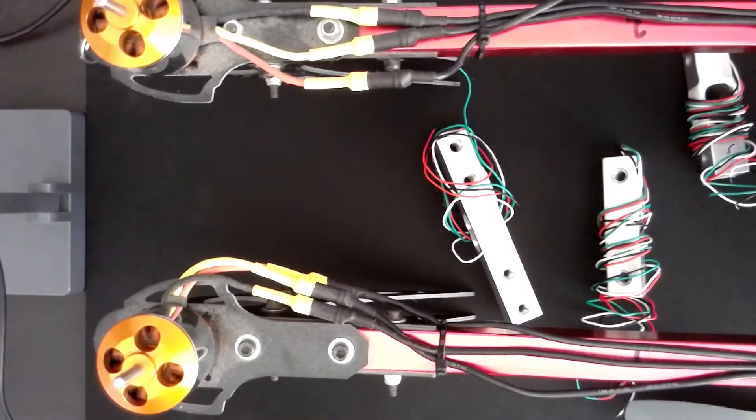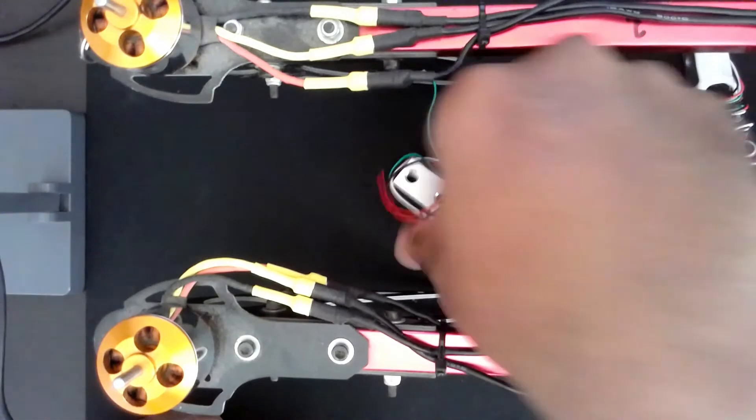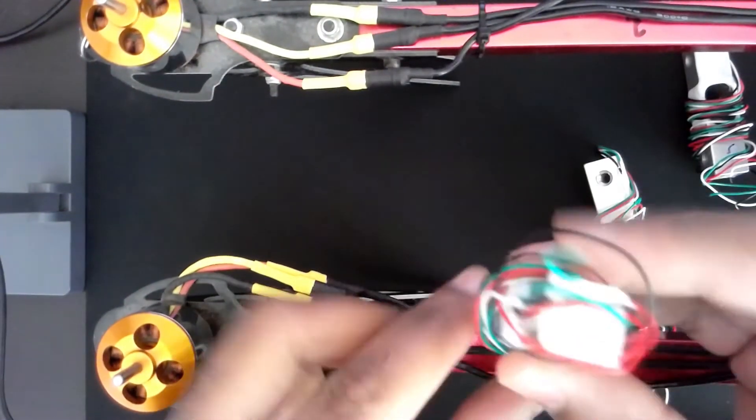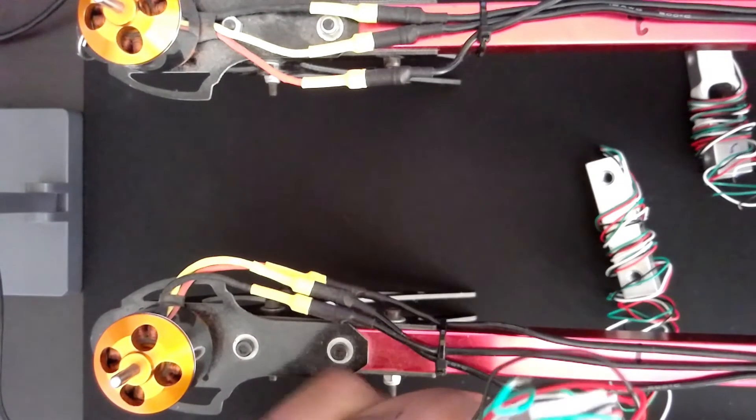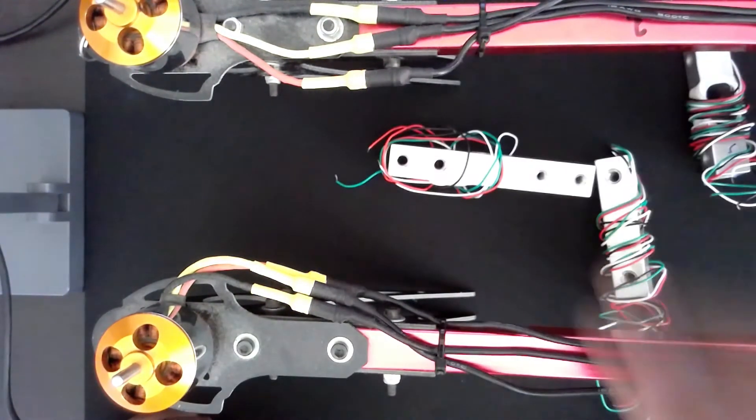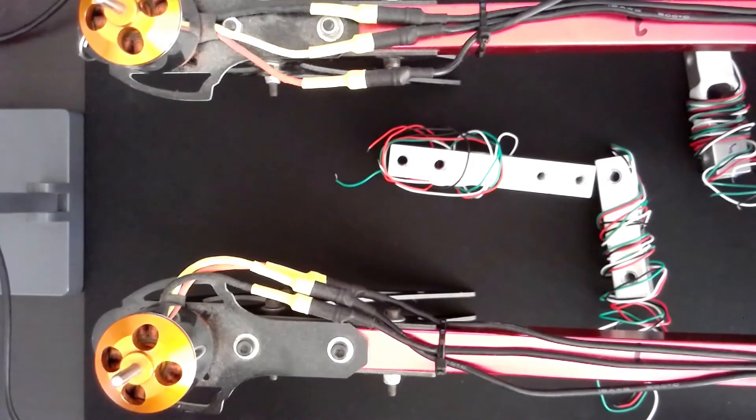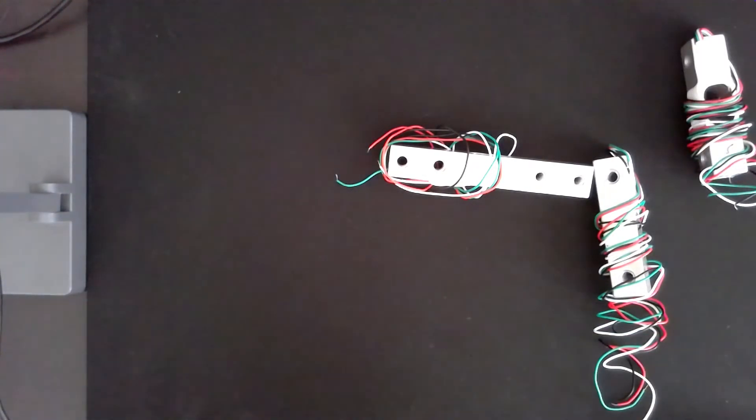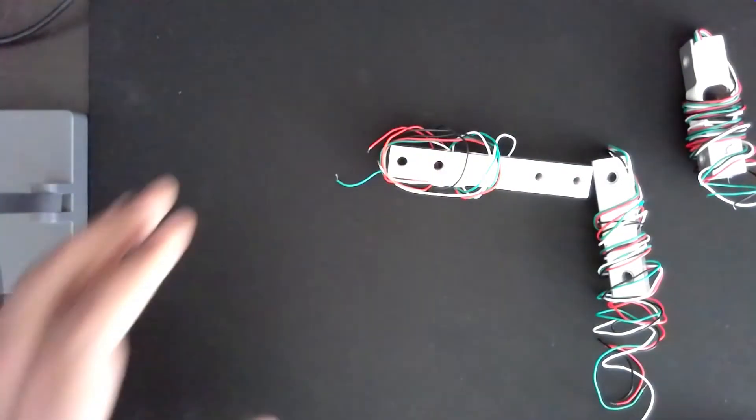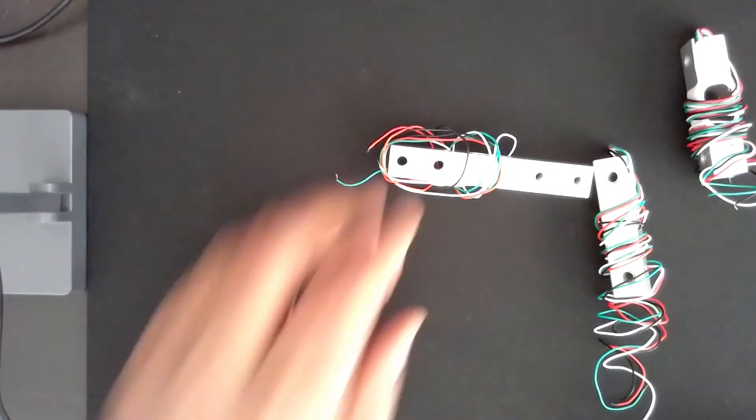So you don't have to make the quadcopter fly. You can just dismount the motors and mount them onto your load cell, and you mount the load cell onto a hard surface and you can measure the force that the motor is generating at different speeds. So you can have a fine-tuned understanding of how much force your motors are generating.